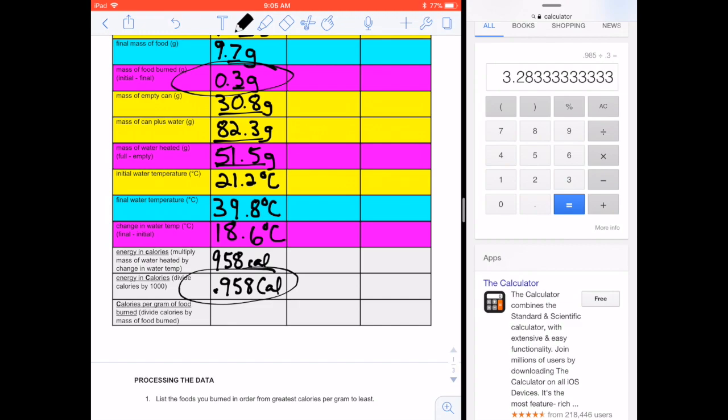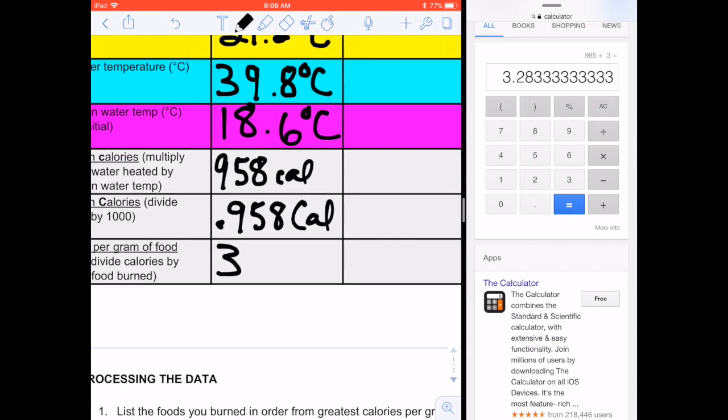Alright, and 0.3 has one significant figure. 0.958 has three significant figures. And then in a division problem or multiplication problem, I just take whichever number has the least. So I'm going to round 3.28 to just 3 big C calories per gram.